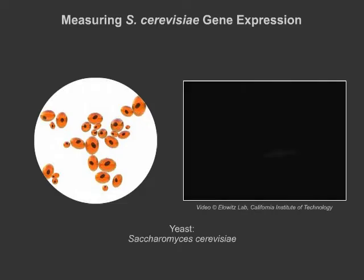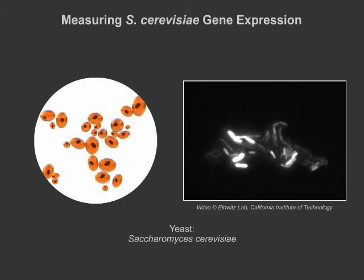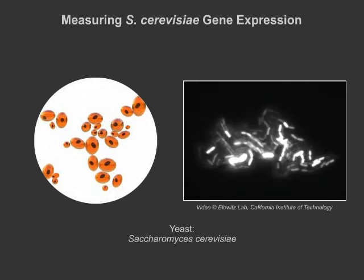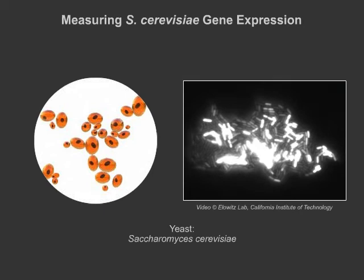S. cerevisiae, more commonly known as budding yeast, is a wonderful organism to examine eukaryotic gene expression because of our ability to mutate certain control sequences known as a promoter region that controls gene expression, such as with this oscillating mutant we have shown here. This data can then be used to fuel models for predicting how certain mutations would influence how much a gene is expressed.